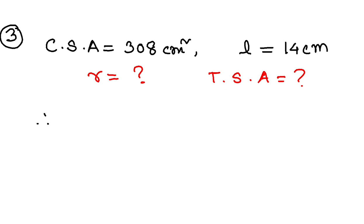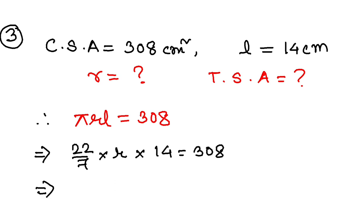We know that CSA is πrL. So πrL is basically 308. If I substitute the values: 22 by 7, radius is not given you have to find it, and L is 14. That equals 308. If you simplify these values, you will get the value of r as 7 centimeters.